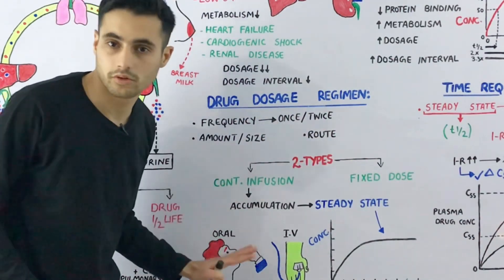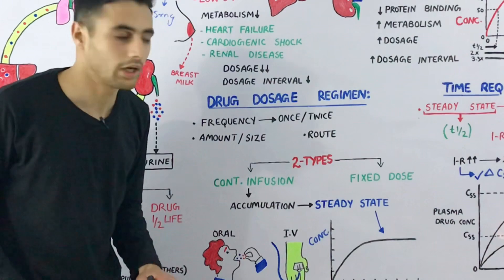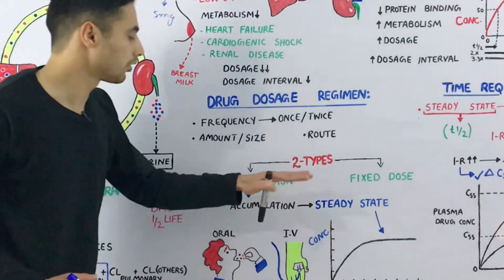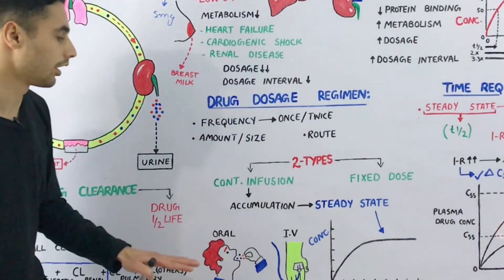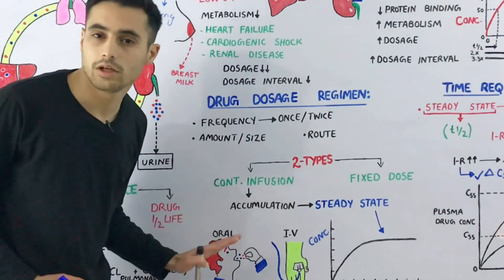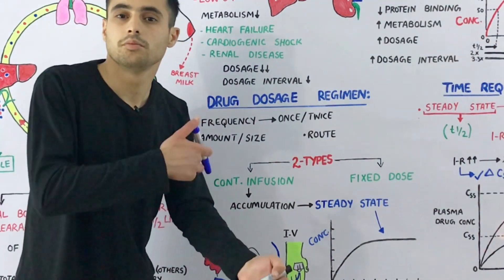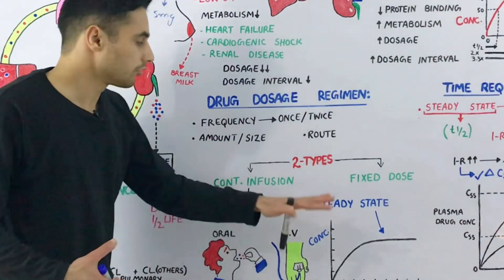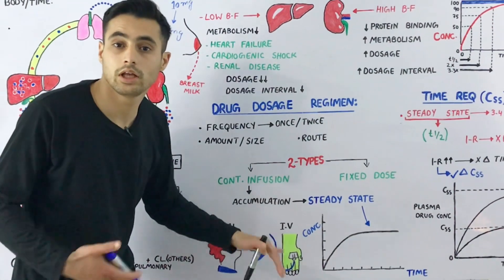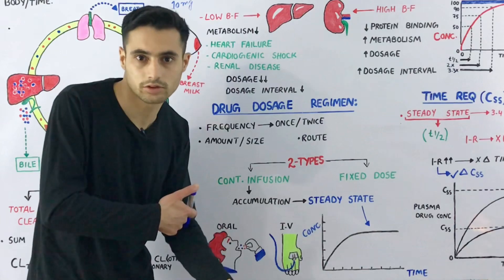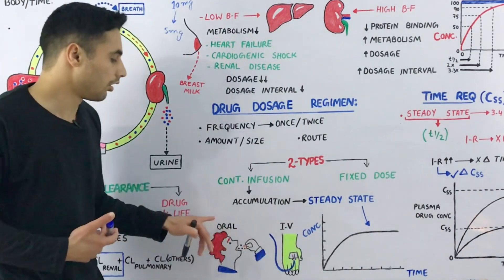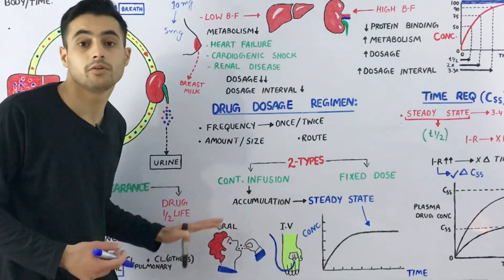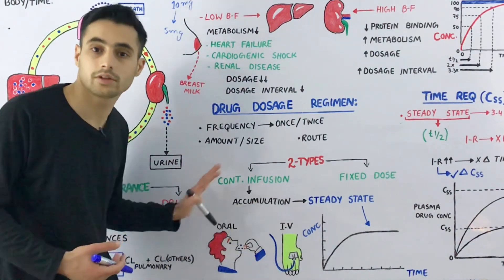There are two types of drug dosage regimen: continuous infusion and fixed dose regimen. In this video we will only discuss continuous infusion. In continuous infusion, as the name suggests, a continuous amount of drug is being delivered into your body — for example, via intravenous injection or fixed oral medication at fixed intervals of time.